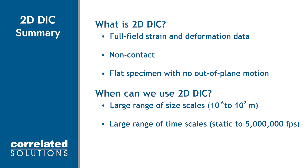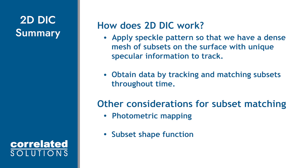In review, 2D DIC is a non-contact method that obtains local and global shape, deformation, and strain data. But with one camera, the specimen must be flat and not move towards or away from the camera. Depending on simply what lens and what camera is used, we can use 2D DIC on surfaces down to a millimeter in size or up to meters in size, from quasi-static applications up to millions of frames per second. DIC works by applying a speckle pattern so that we have a dense mesh of subsets on the surface with unique speckle information to track as the specimen deforms. We obtain data by tracking and matching subsets throughout time while accounting for changes in the subsets such as light changes or shape deformation.